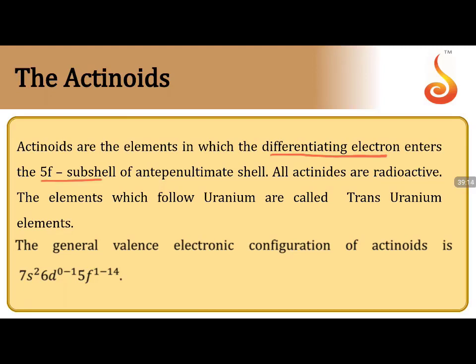Actinides are elements in which the differentiating electron enters the 5f sub-shell. All actinides are radioactive. In lanthanides, all except promethium are non-radioactive. In actinides, all elements after uranium are synthetic and radioactive — they are called transuranic elements. The general electronic configuration is 5f^(1-14) 6d^(0-2) 7s².